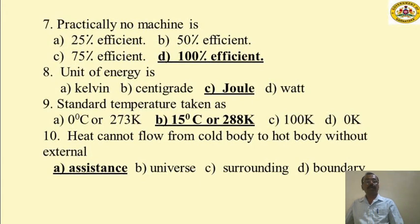MCQ: Practically no machine is option A 25% efficient, option B 50% efficient, option C 75% efficient, option D 100% efficient. Option D — 100% efficient — is correct, meaning no real machine achieves 100% efficiency.